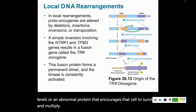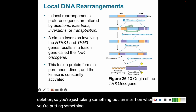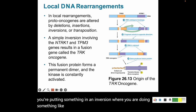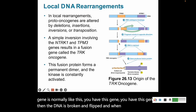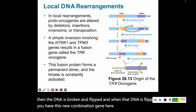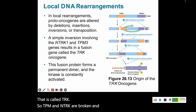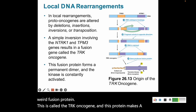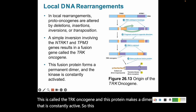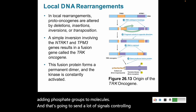Local DNA rearrangements can change a proto-oncogene by a deletion, an insertion, an inversion, or a transposition. In an inversion, the DNA is broken and flipped, creating a new combination gene called TRK. The genes TPM and NTRK are broken and rejoined, giving a fusion protein called the TRK oncogene. This protein makes a dimer that is constantly active, so this kinase is constantly adding phosphate groups to molecules, sending signals controlling how the cell grows and goes through the cell cycle.